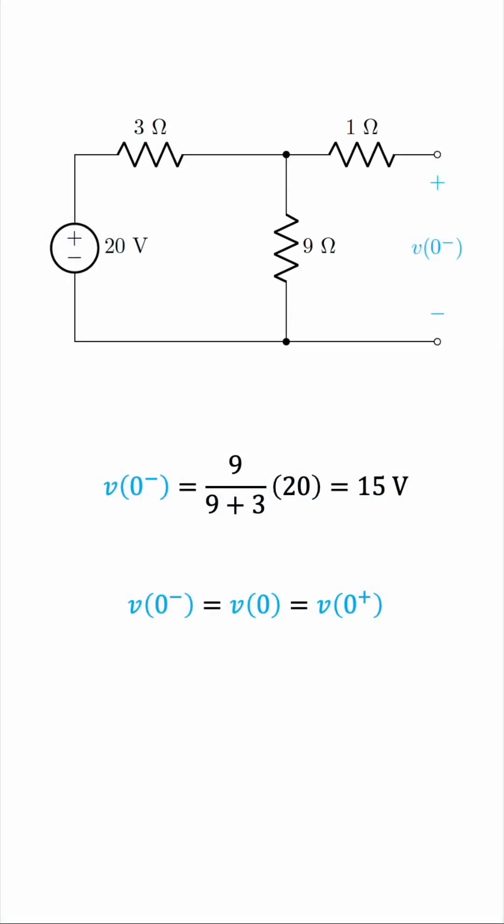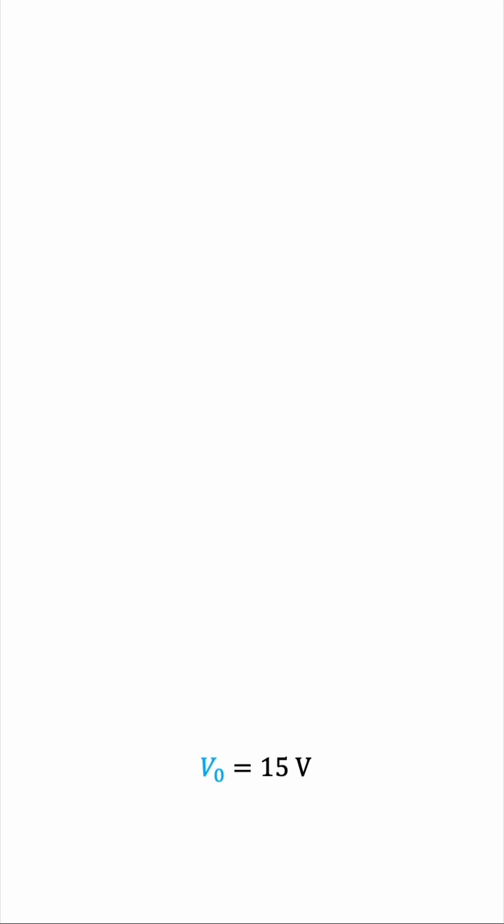From this, we know that the voltage across the capacitor just before we open the switch is exactly the same as the voltage just after we open the switch. And this is very important. We can call all these V zeros, capital V sub zero, and this is 15 volts according to our calculation. So we can now use this value as the initial voltage across the capacitor in the second stage of the circuit, when the switch is opened.